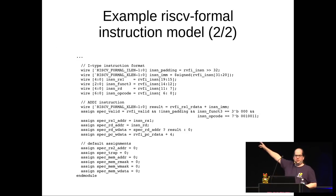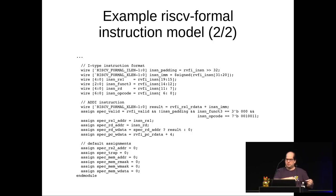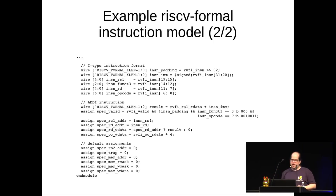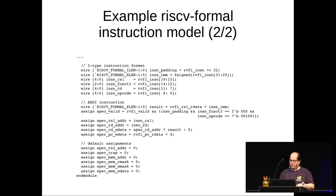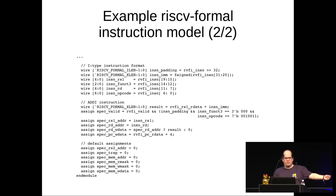There are no assertions in the model because it just models the expected behavior. A wrapper instantiates the model alongside the core and contains the assertions. One reason for this separation is that we can also generate monitor cores that run alongside your core in simulation, emulation, or on FPGA to check correctness in real time. This is very helpful when you run your core for days and observe incorrect behavior, but there are potentially millions of cycles between the observable error and where the core first diverged from the specification.